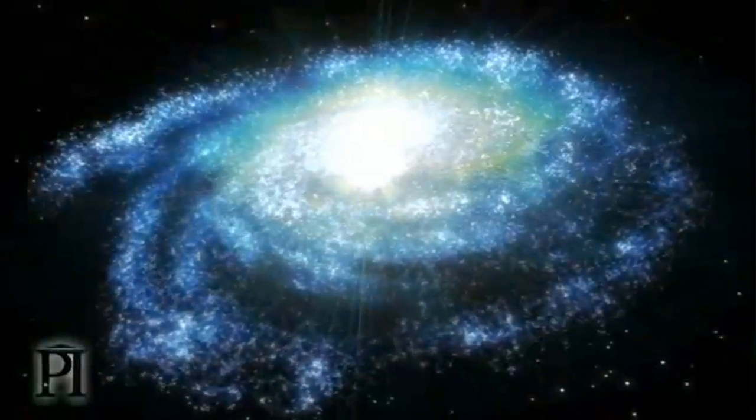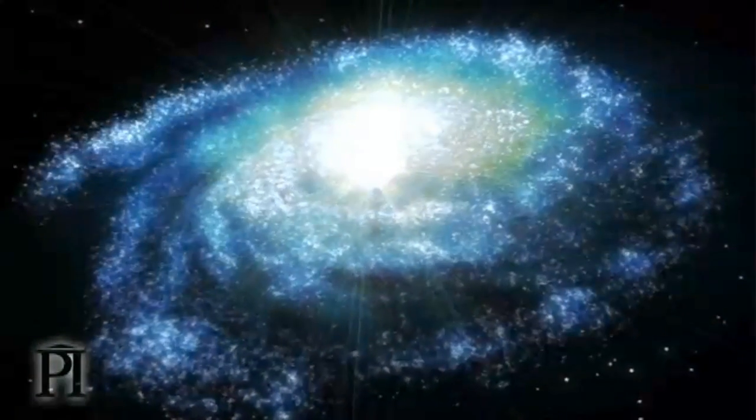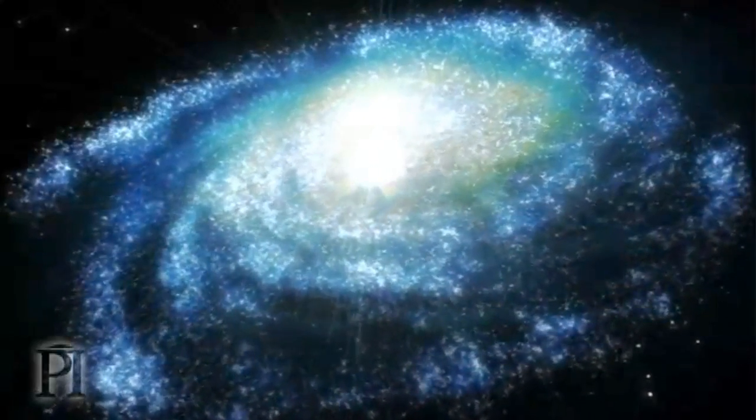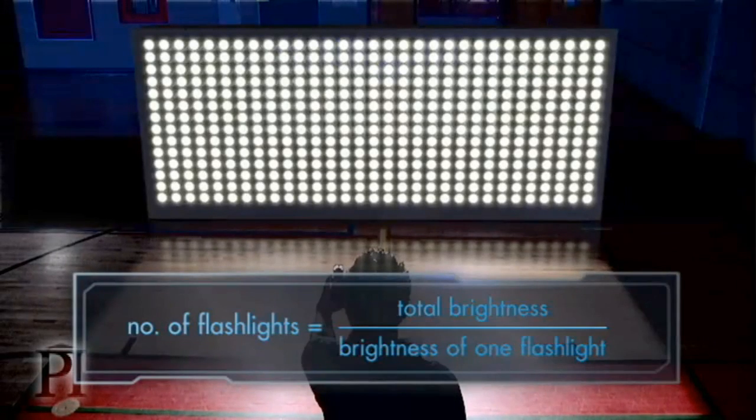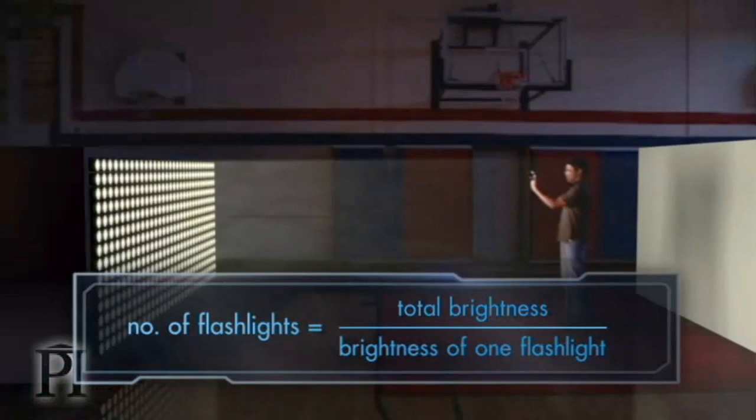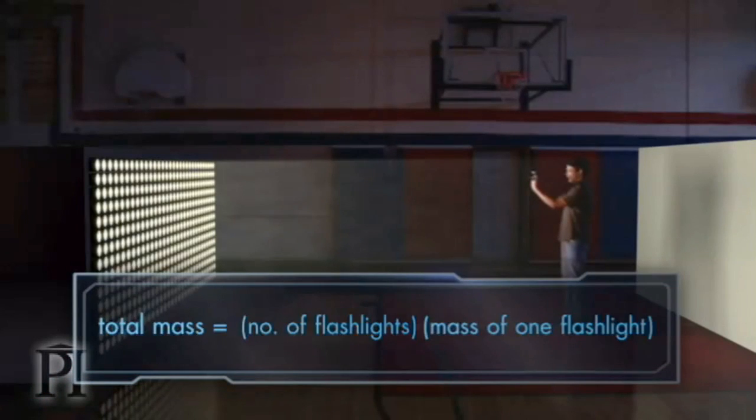It also helps us understand why Vera Rubin saw the stars in Andromeda moving so much faster than anyone expected. Once you've got the total brightness, compare it to the brightness of the single flashlight. The relationship between the brightness of all the flashlights and just one will tell you how many flashlights there are. Then, multiply the number of flashlights by the mass of one flashlight, and you've got the total mass.